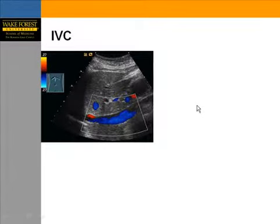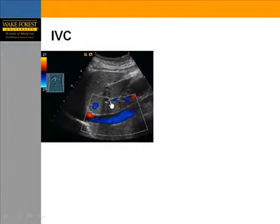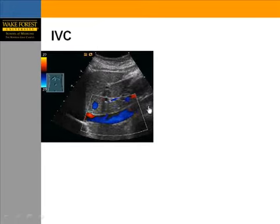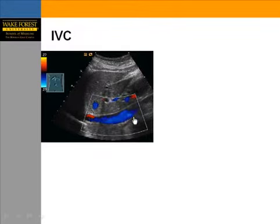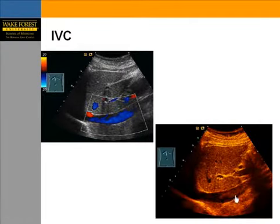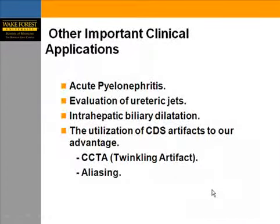Another example is the IVC. You can be misled if you start with color Doppler — color override can cause you to miss the diagnosis of thrombosis. Look at this slide: color Doppler nicely fills the lumen, and from a still image alone you would say everything is fine. But the grayscale shows echogenic material within the IVC, consistent with a clot that you can easily miss if you overwrite it with color Doppler.